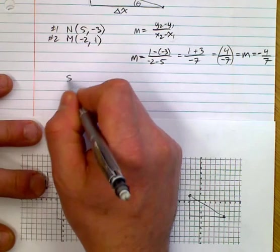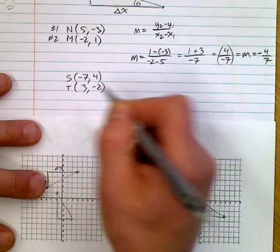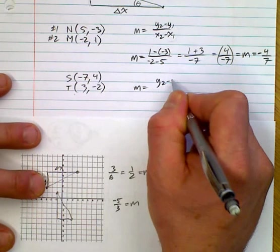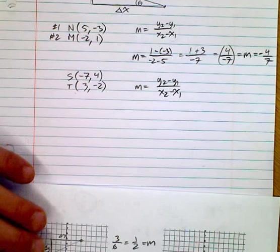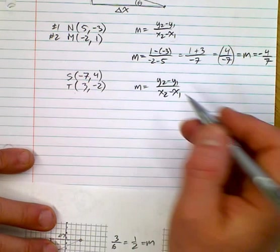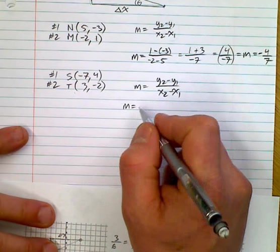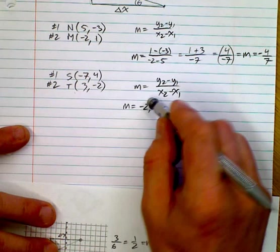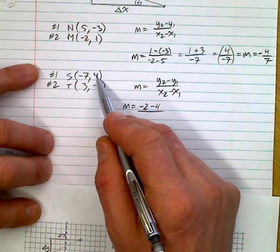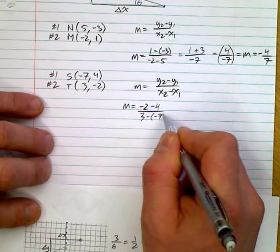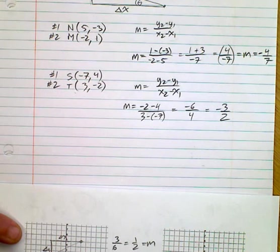How about trying to find then the slope between s, which is negative 7 and 4, and t, which is 3 and negative 2. See if you can find the slope for that real quick. Pause the video. Give it a shot. Find the slope between those two points. So I'm just plugging in these numbers. I numbered them 1 and 2. So this is y2, and that's y1. This is x2, and that's x1. Ended up with a slope of negative 3 halves.